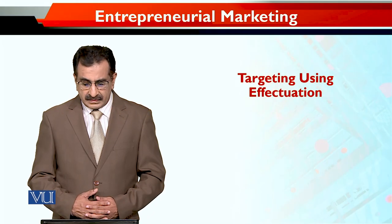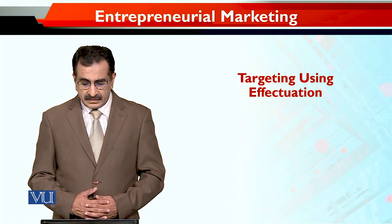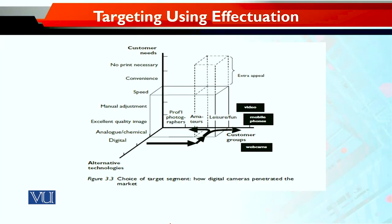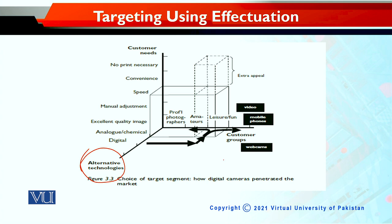Targeting using effectuation. This is Abel's model, and we can see here there are alternative technologies. This is the digital camera that was initially attracting customers. They were amateurs, and they were using it for leisure and fun.